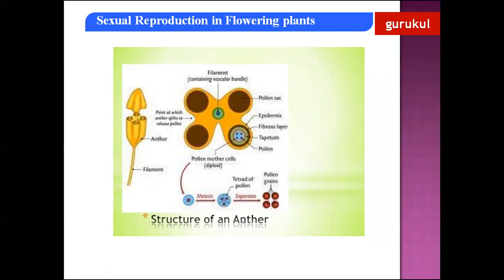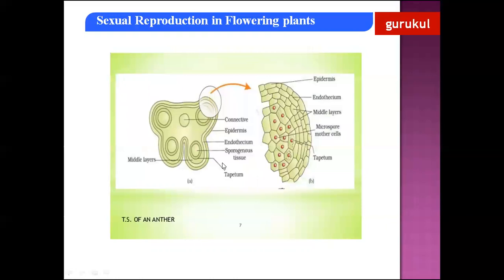The transverse section of the anther appears like a butterfly shape. You can see one lobe and another lobe, and these are the microsporangia or pollen sacs. When you enlarge one microsporangium, you can see the different parts of the anther. The wall of the anther is differentiated into four layers.